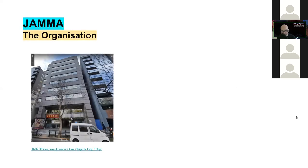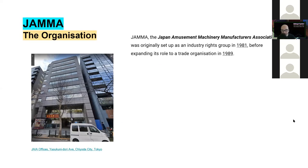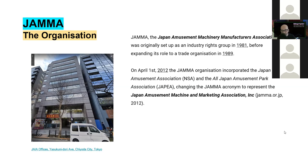A little bit about the organization formerly known as JAMA. It was originally set up in 1981, and the acronym stood for Japan Amusement Machinery Manufacturers Association. It was set up as an industry rights group back then, and in 1989 it expanded its role to become a trade organization. Then in 2012, the organization incorporated the Japan SC Amusement Association and the All Japan Amusement Park Association, and the acronym changed to stand for Japan Amusement Machine and Marketing Association. The JAMA organization represents the interests of the Japanese amusement industry as a whole — not just the video game side of it, but all sorts of coin-operated amusements.